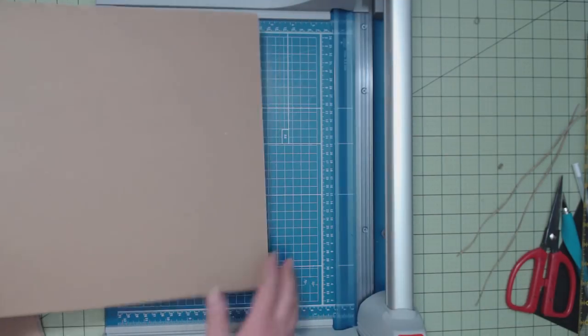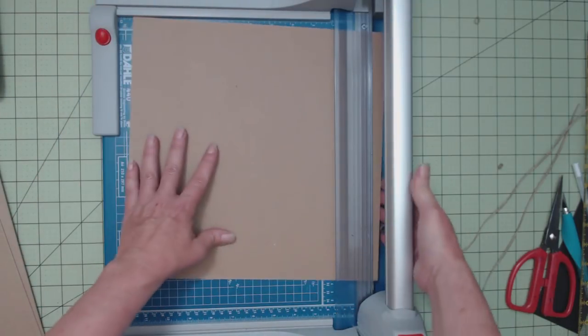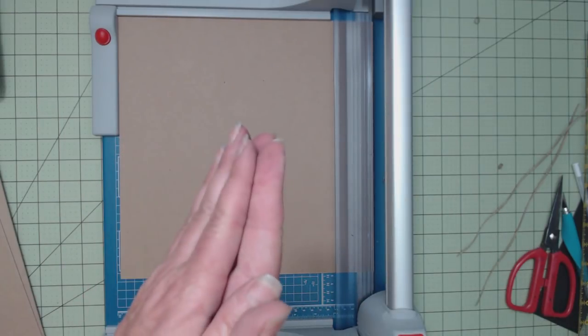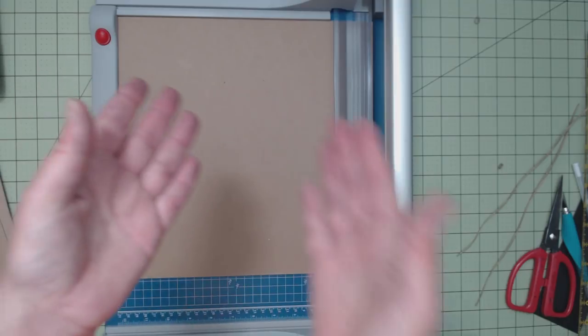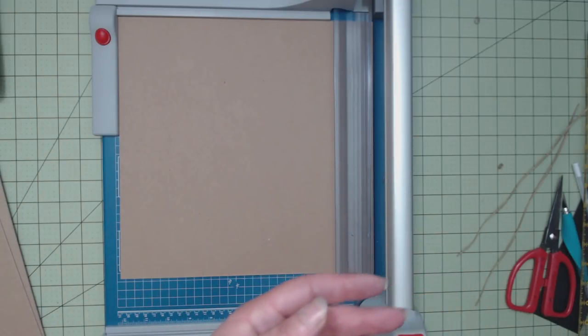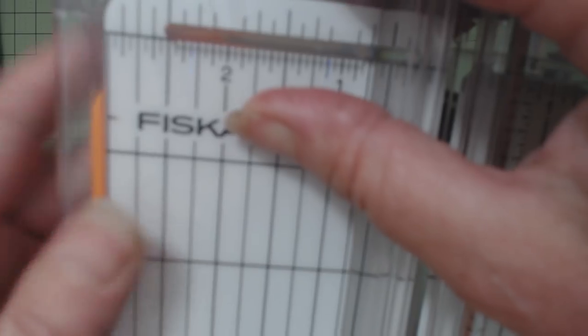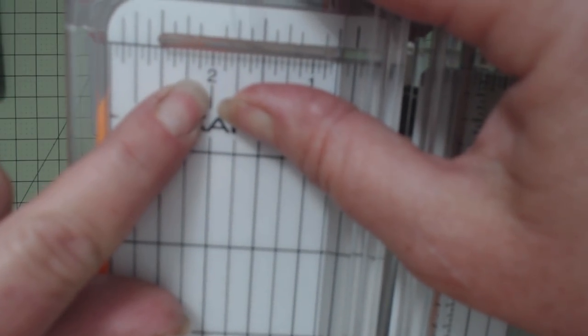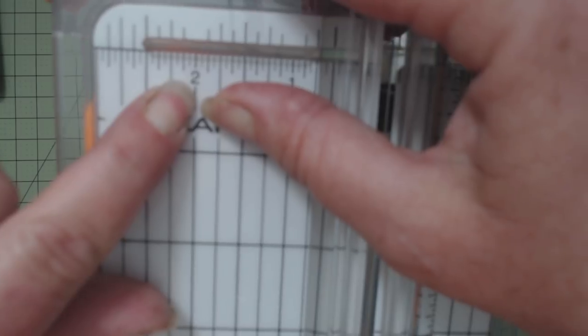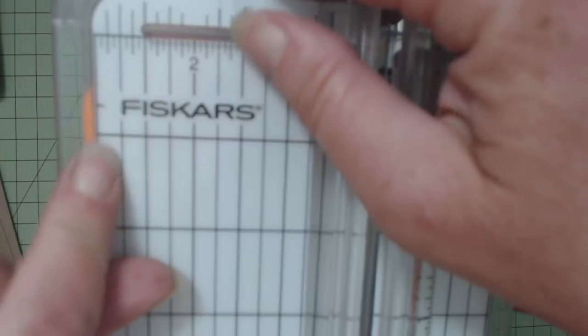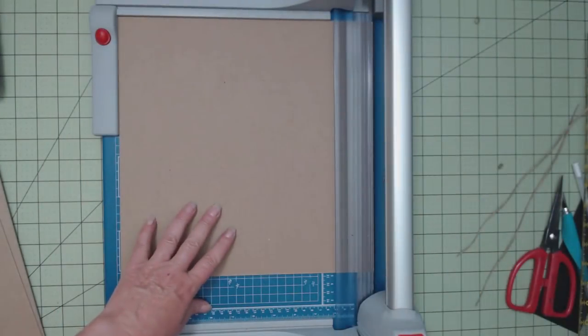Whatever cutter you're using, use the same cutter through the entire project because every cutter is different. Some people move things right to the line, some people put it right on the line. Say if it's a Fiskars cutter, you got your marks here. Some people put it right on the line. You're supposed to put it just to the right of the line for future reference.